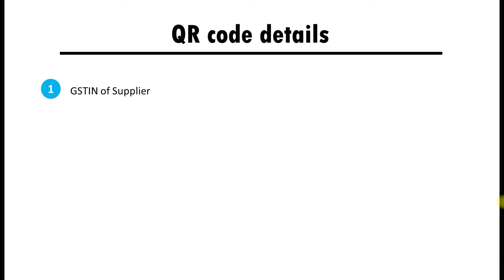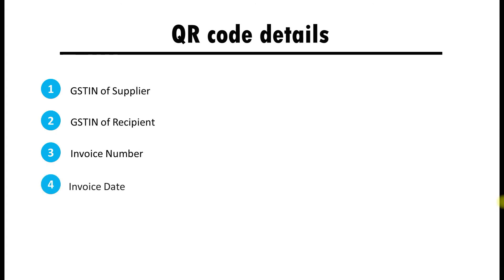Now let's see QR code details. The QR code will contain: GST number of the supplier, GST number of the recipient, invoice number, invoice date, invoice value, taxable value, and gross tax amount.